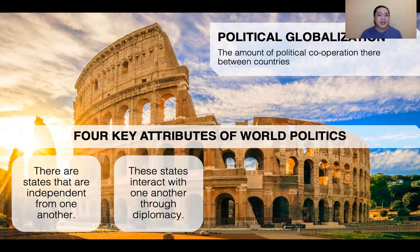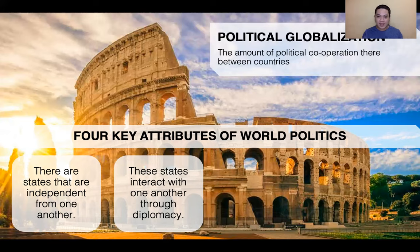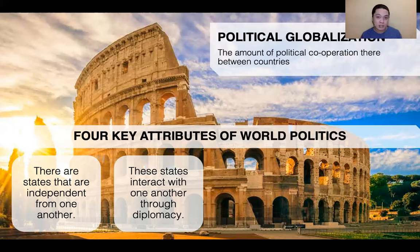The next attribute is that these states interact with one another through diplomacy. Like human beings, we interact and call each other friends. However, in world politics and the global interstate system, their friendship is called diplomacy. They interact in a diplomatic way and don't engage in wars easily. Diplomats are well-versed and responsible for their own actions.